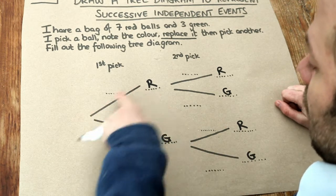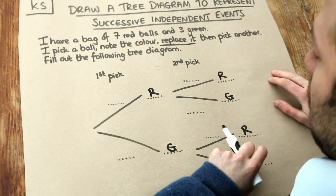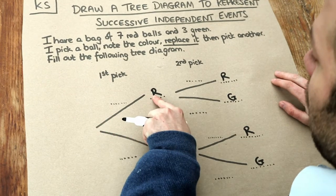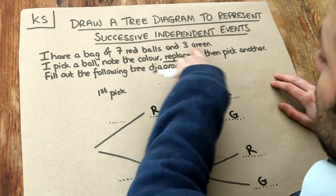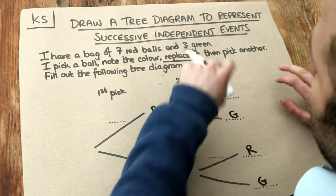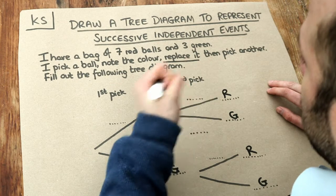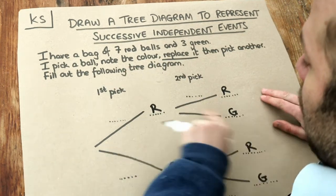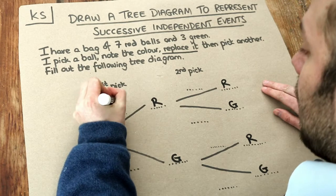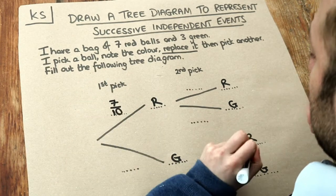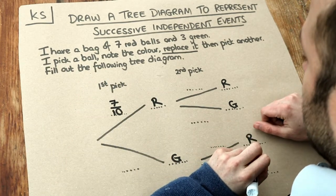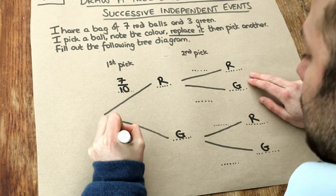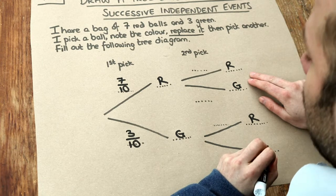Now on the lines themselves — these branches — that's where we put the probabilities. On our first pick, what's the probability of picking a red ball? Well, in total there are 10 balls: 7 red and 3 green, so it's out of 10. Of those 10 balls, 7 are red, so the probability of getting red is 7 out of 10. Similarly, the probability of getting green is 3 out of 10, because out of the 10 balls, 3 are green.